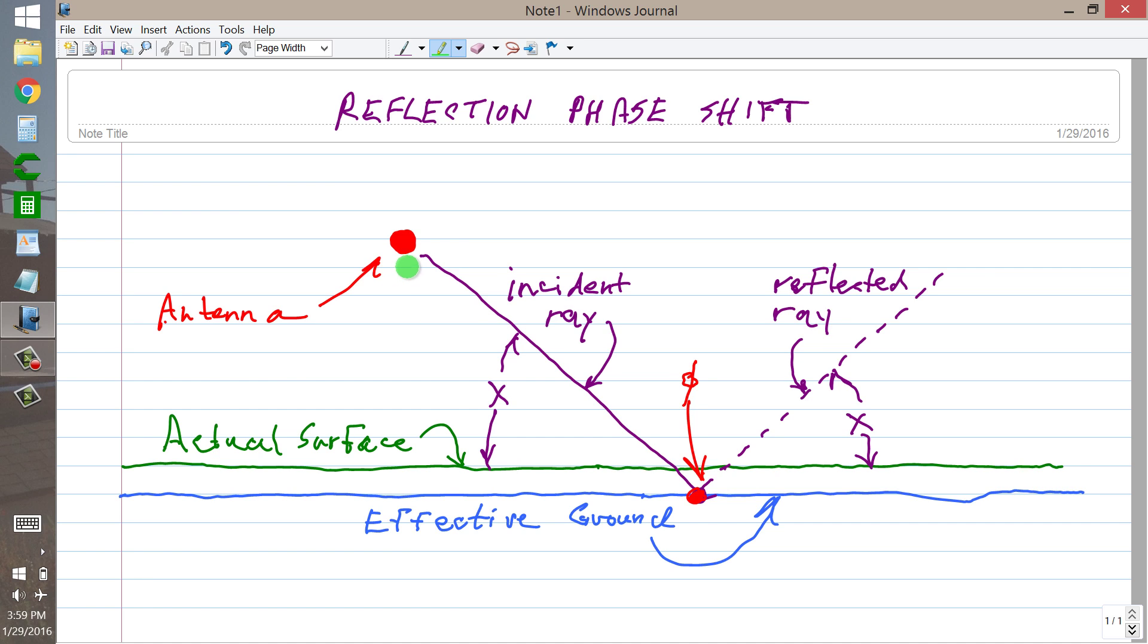If you have a horizontal dipole, you will encounter a phase shift of 180 degrees when a ray from that dipole hits effective ground, which is about 5 to 10 feet below the actual surface. In most cases, you will have a 180 degree phase shift. The angle of incidence, x, equals the angle of reflection, x.